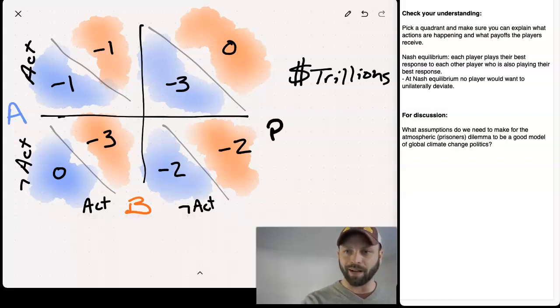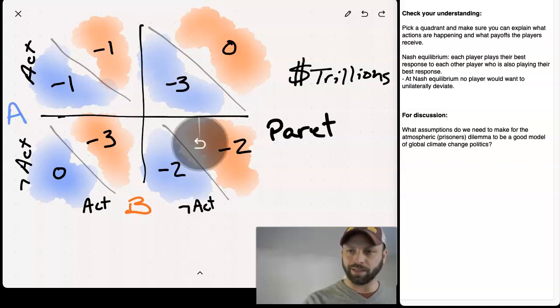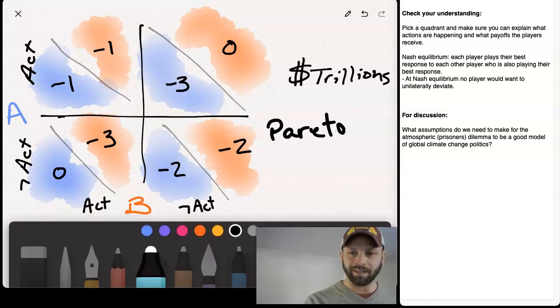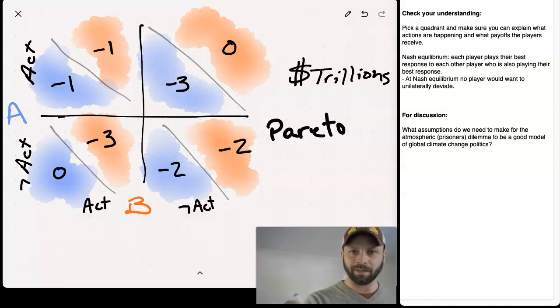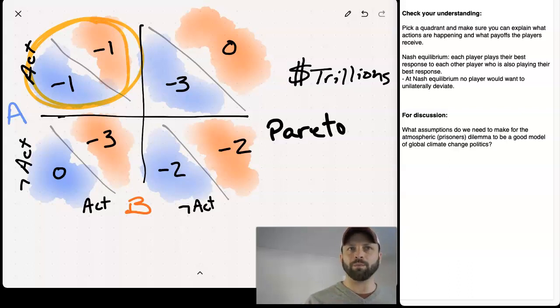Because here, the Pareto efficient point is this one. That's the place where nobody could be made better off without making anybody else worse off.